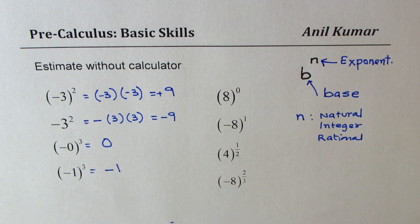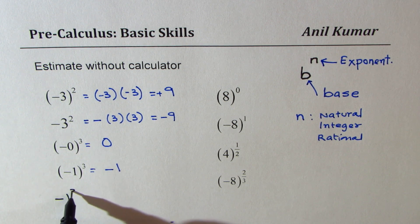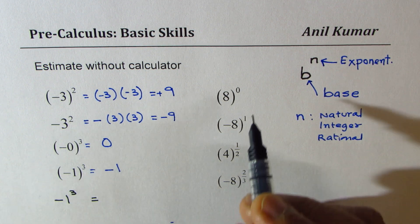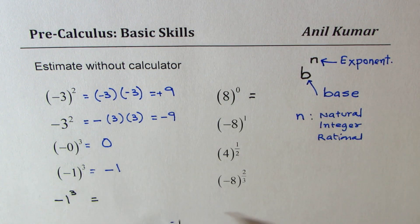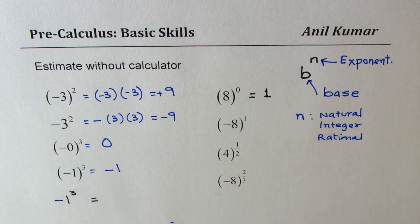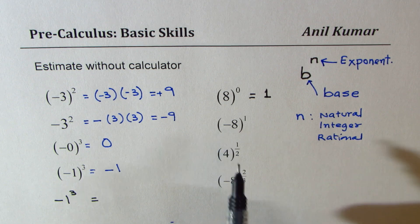So I hope that helps you understand how we get all these results. Here is a test question for you: minus 1 cube is equal to what? Let's move on. Anything to the power of 0 is always 1. Anything to the power of 1 is the number itself, so it is minus 8.